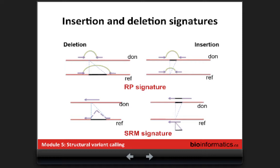For an insertion, in the same way you expect to see two parts of your read broken into pieces with two of them stacked together. You can clearly see the limitation of that approach: if the insertion is too long, you won't be able to find the other read. That's why now for structural variant calling we tend to use long reads, mate-pairs, or synthetic reads to get this information.